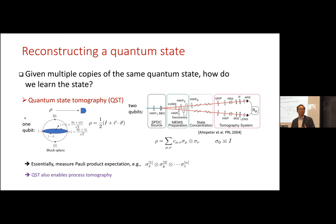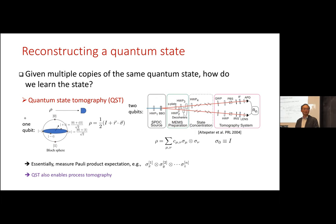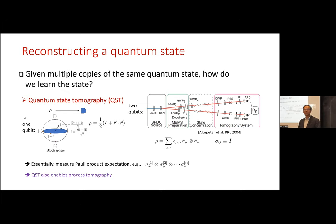This is quantum state tomography: you need to measure Pauli products and know all their expectation values, since you can expand the density matrix in terms of Pauli products. But the number of operators you have to measure is exponential — for n qubits, there are 3^n operators to learn. If you could do this, you could also use quantum state tomography to probe a process, which is called quantum process tomography: you send different inputs, measure the output via state tomography, and infer what the black box is doing.